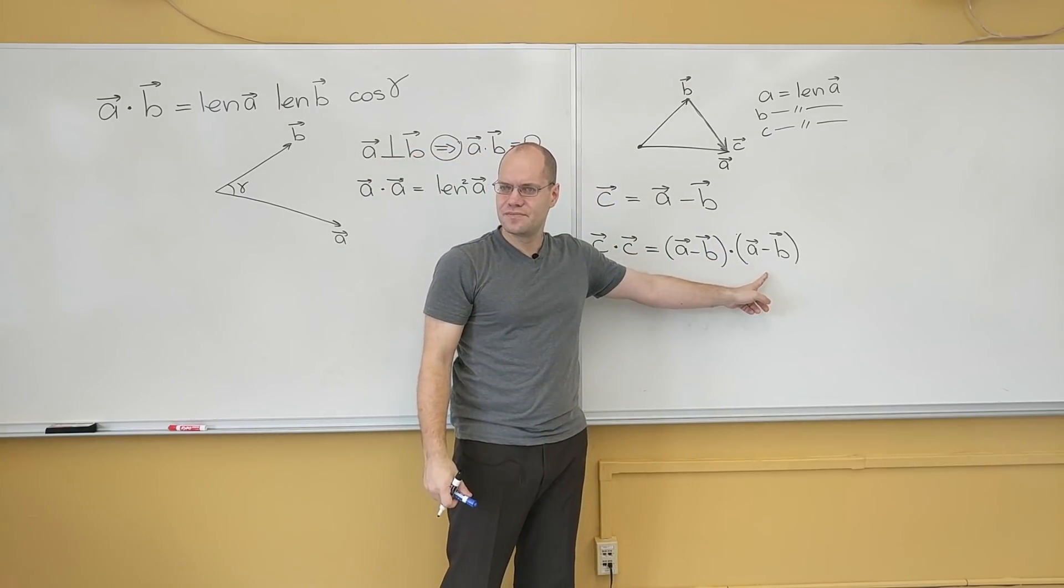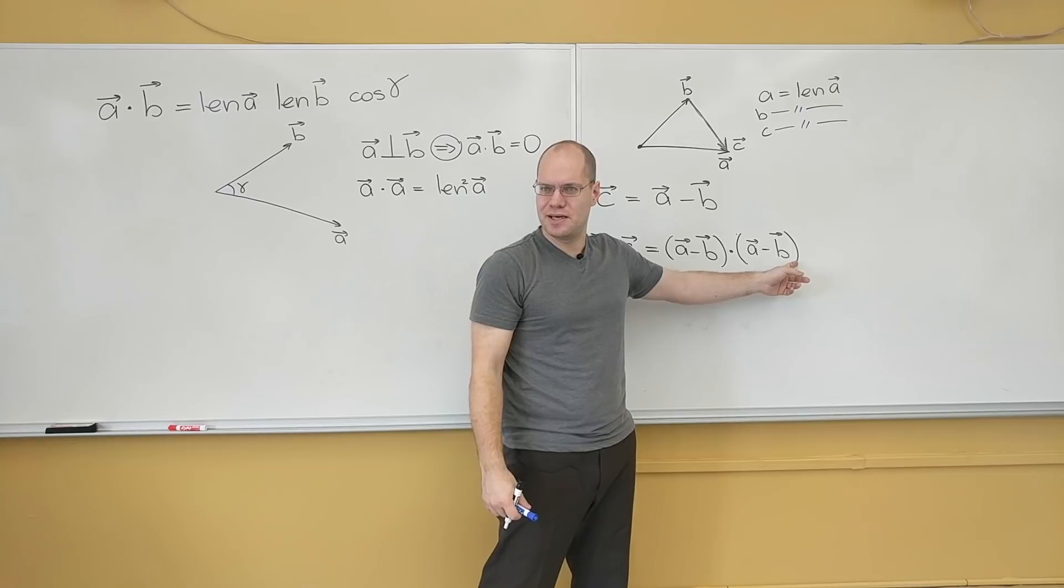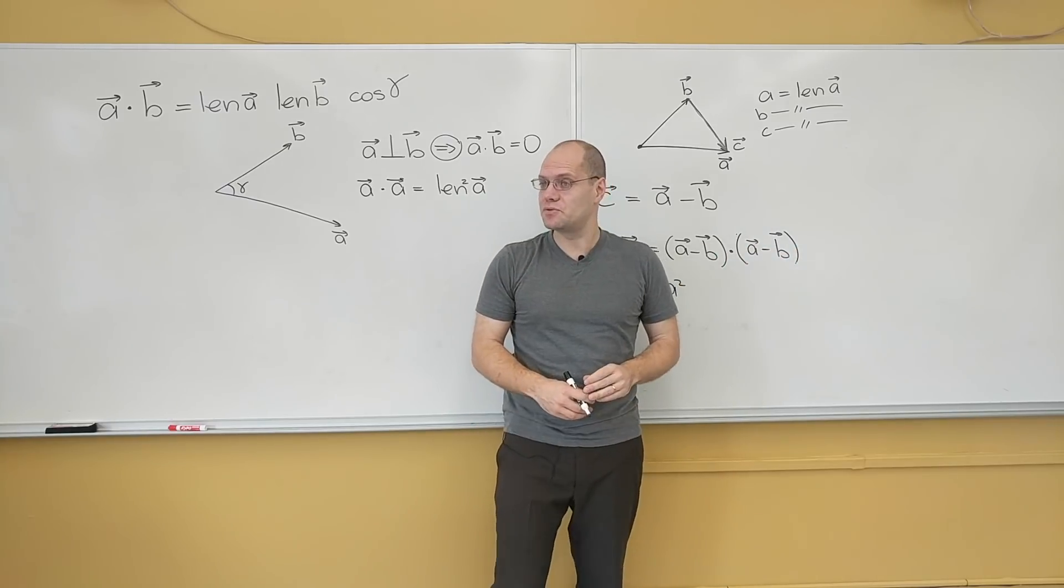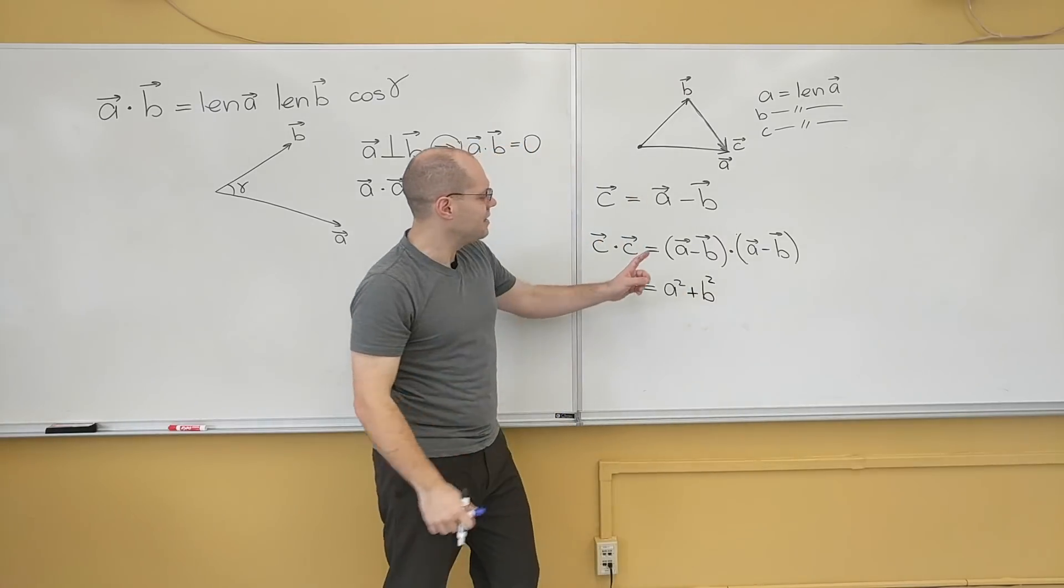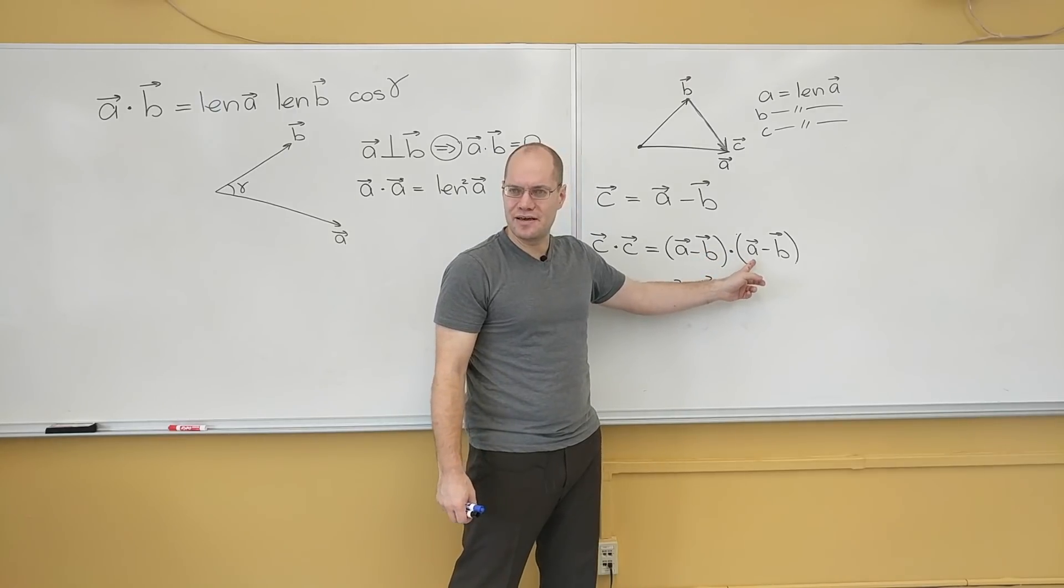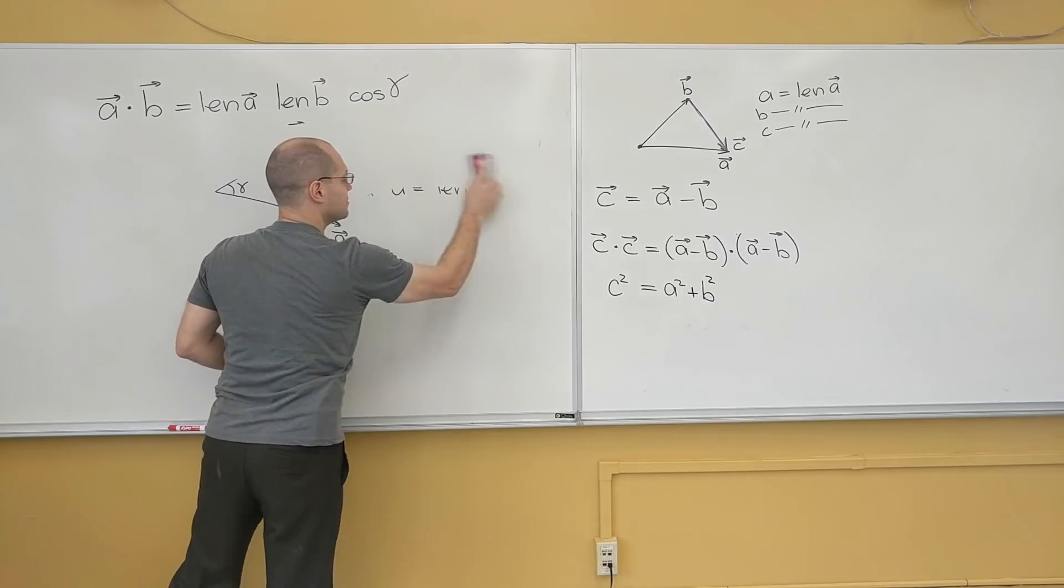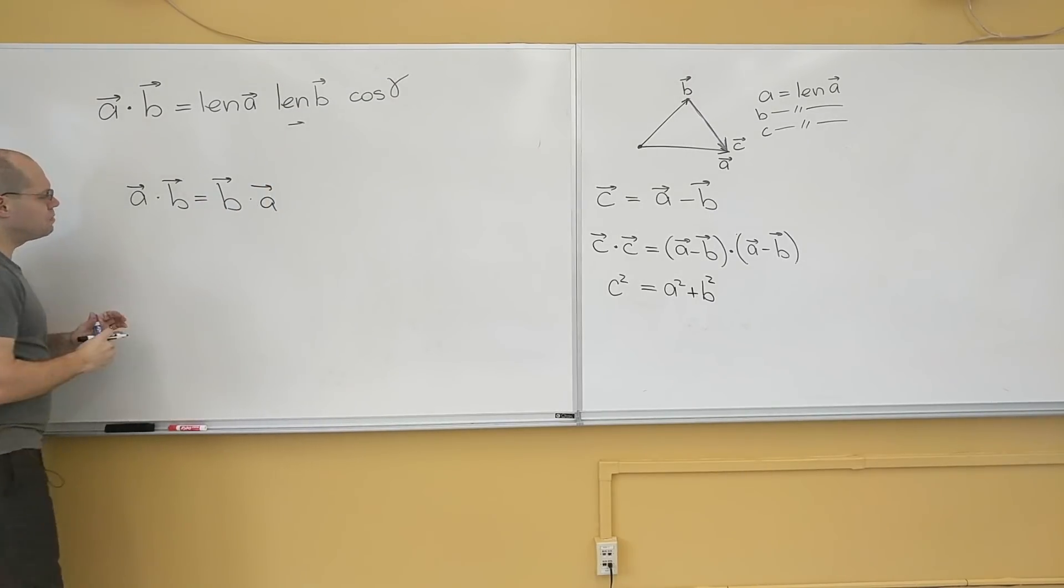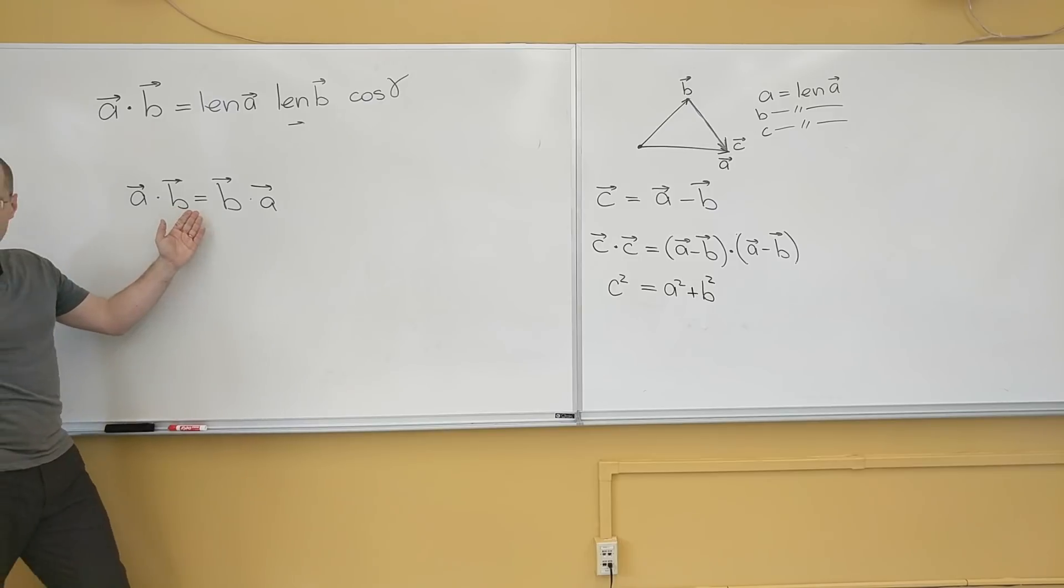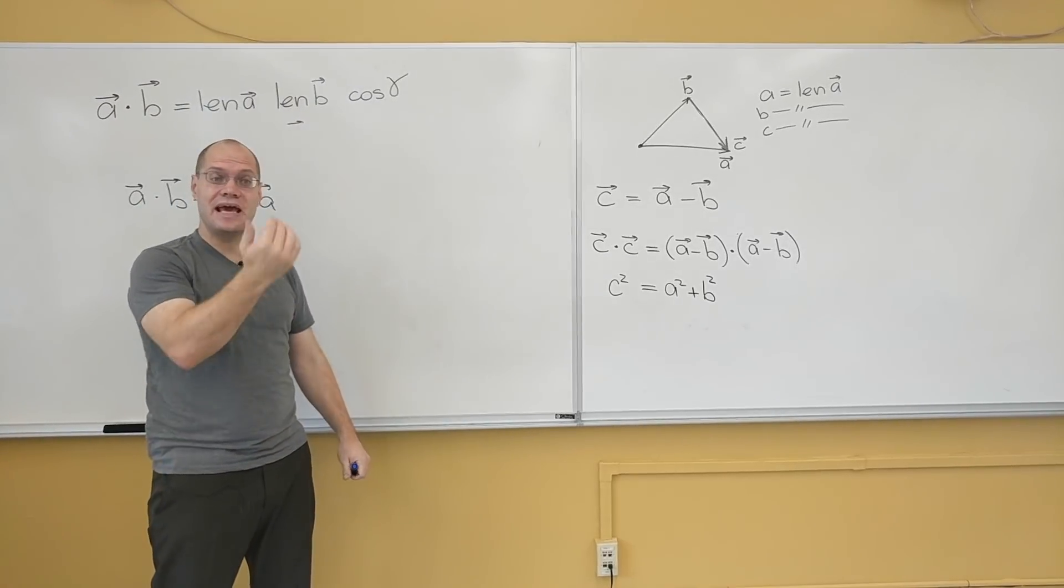Let's see what we'll have on the right. A dotted with A. That's the length of A squared. Then there will also be minus B dotted with minus B. That will be the length of B squared. Then there will be A dotted with B. Minus A dotted with B. And minus B dotted with A. Now, are those the same thing? A dotted with B and B dotted with A? Is the dot product symmetric? Yes, it is symmetric. Let me start documenting its properties.